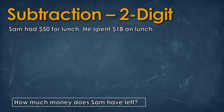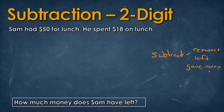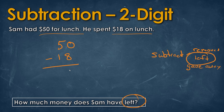Now let's try another subtraction problem. Remember, whenever we're trying to find something that means subtract, we look for words meaning something was removed — like 'left' or 'gave away'. Sam had $50 for lunch and spent $18 on lunch. How much money does Sam have left? There's our key word: 'left'. So we subtract: 50 minus 18. Zero minus 8 won't work, so we borrow from the 5, giving us 10 minus 8 equals 2, and 4 minus 1 equals 3. Sam has $32 left.